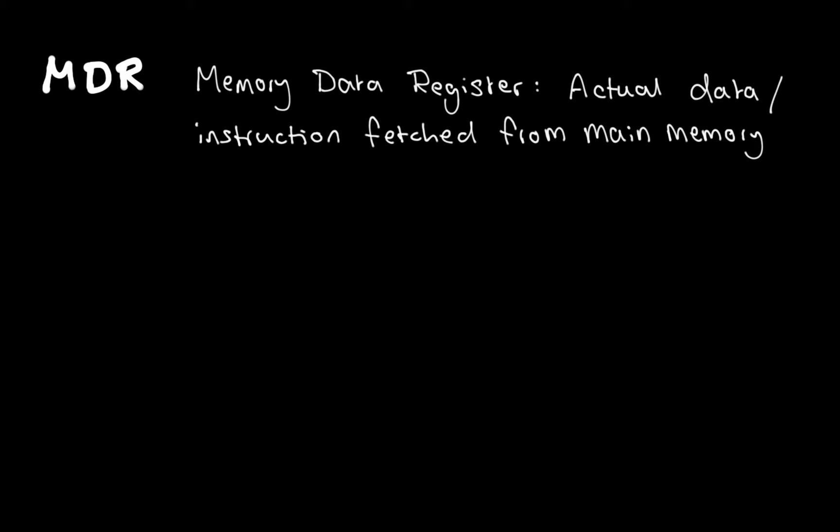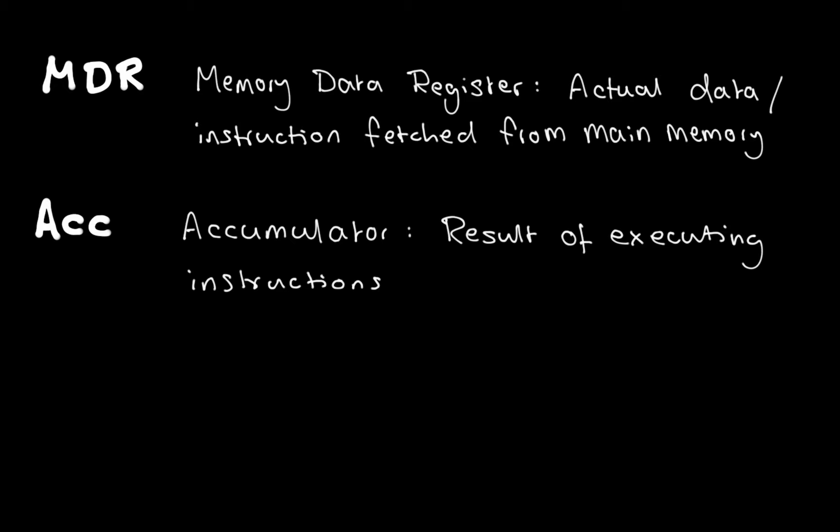We also have the accumulator, sometimes abbreviated to ACC. This stores the result of the executed instruction. For example, if we've added 10, this would store the result within itself before it's then loaded off to or stored in main memory or secondary storage.